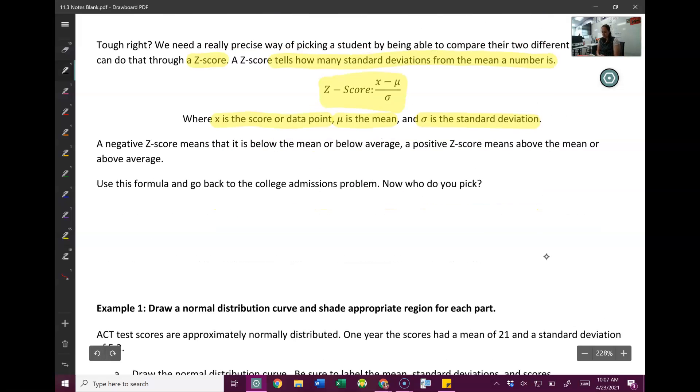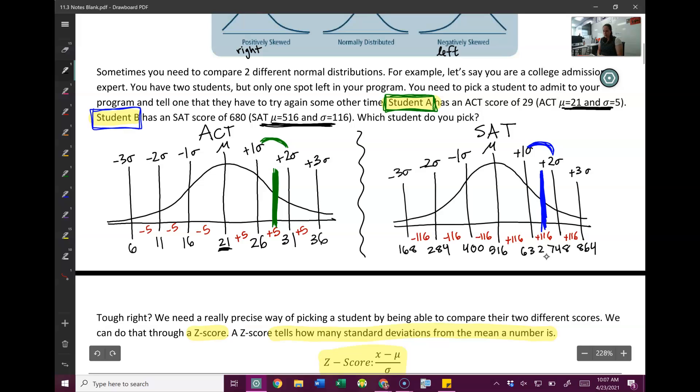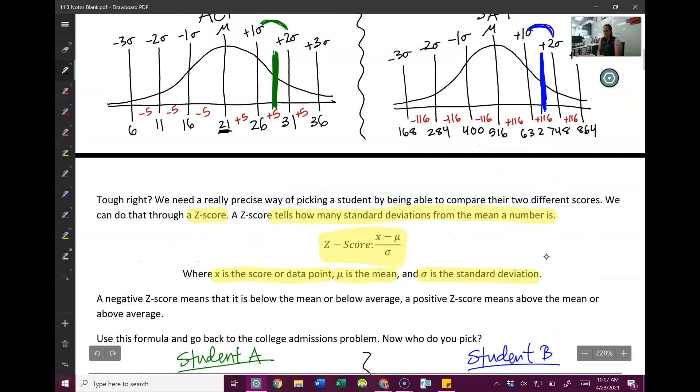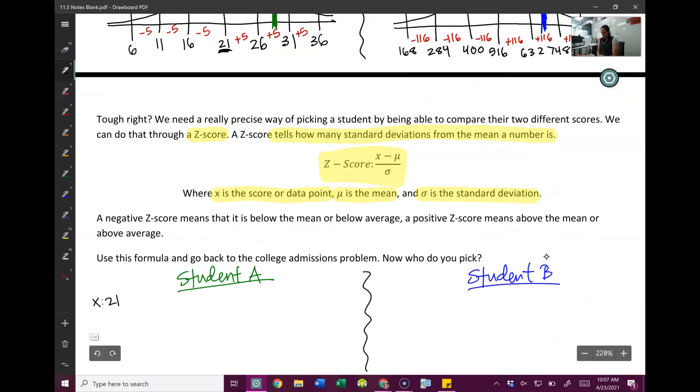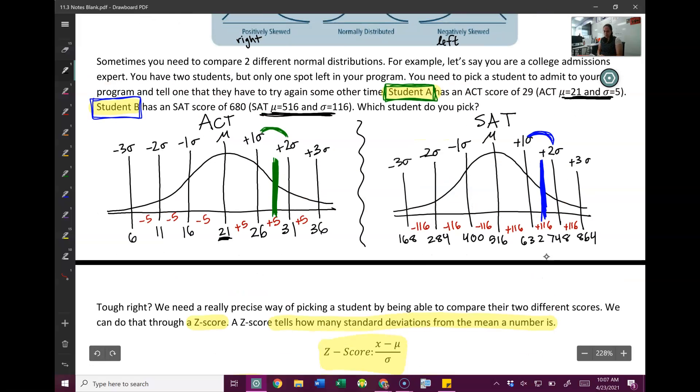So let's use this formula to go back to our students now. So we've got student A and student B. And let's start by listing. So student A, X is their score. So I can go back here. Student A scored 29. Mu is the mean. So the mean on the ACT was 21.